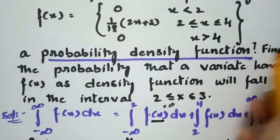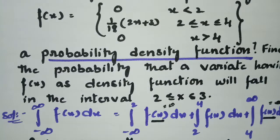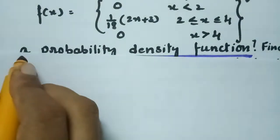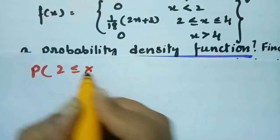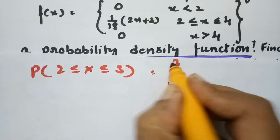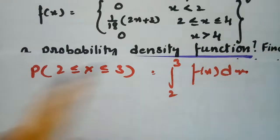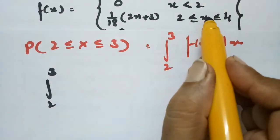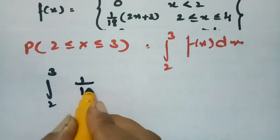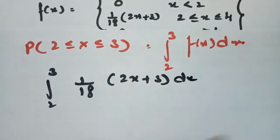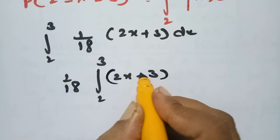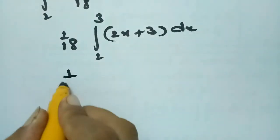Next, we find the probability that the variate falls in the interval 2 ≤ x ≤ 3. We compute P(2 ≤ x ≤ 3) = integral from 2 to 3 of f(x) dx. Between 2 and 3, the function value is (1/18)(2x + 3), so this becomes (1/18) times the integral from 2 to 3 of (2x + 3) dx.